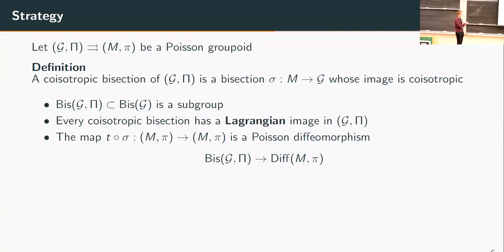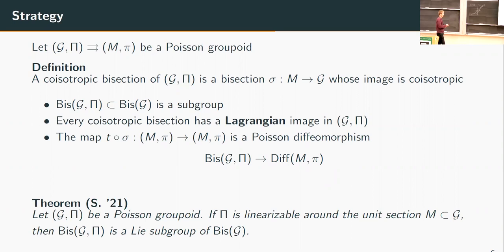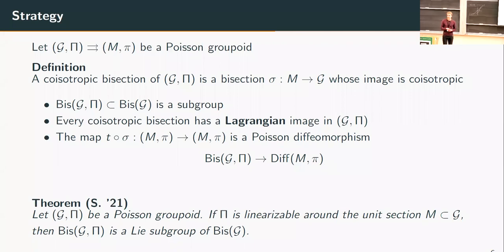The anchor map of the coisotropic bisections lands in the group of Poisson diffeomorphisms of the base. Just as before, with M cross M replaced by the groupoid, we have the following: if the Poisson structure on the groupoid is linearizable around the unit section, then the group of coisotropic bisections is a Lie subgroup of the group of bisections. That is the main result.